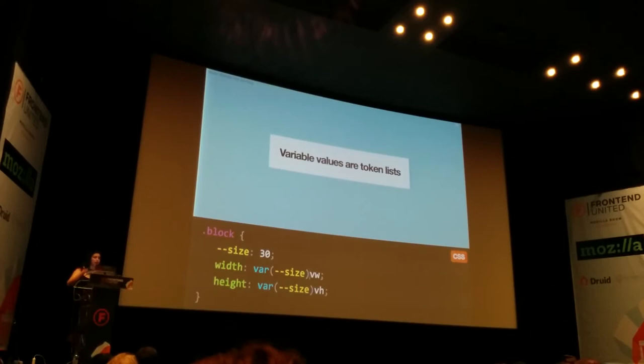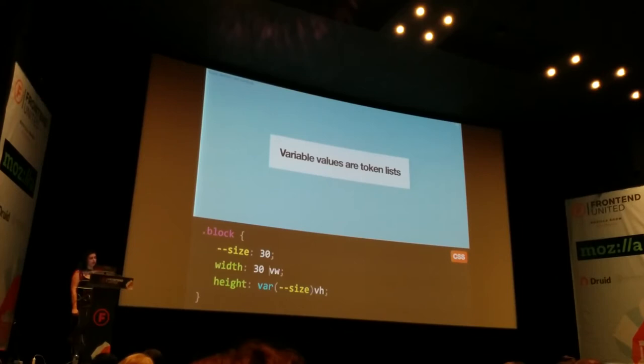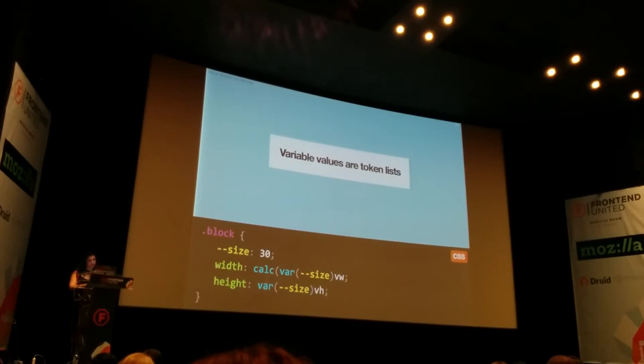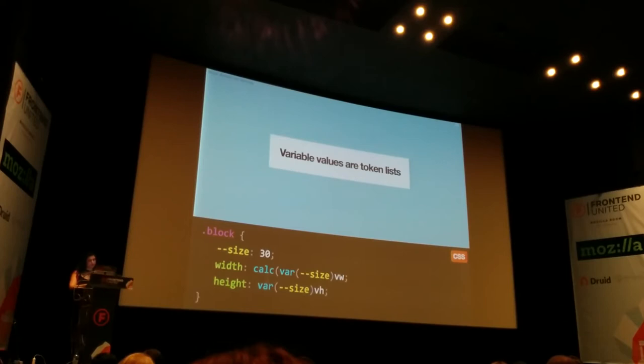You cannot change actual parsing by using variables — you cannot change tokens into another type of token. What the browser sees is essentially equivalent to a number followed by a VW identifier, which is clearly invalid. That doesn't mean you can't do what you wanted. As is common with CSS, there usually is a way — just very verbose. You can use the `calc()` function and multiply `1vw` by the value of your variable.